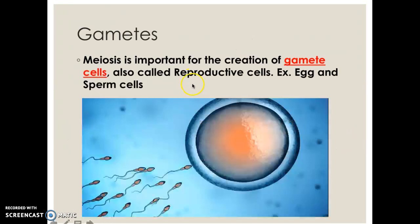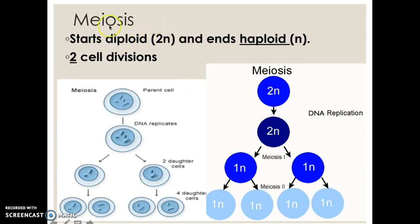Now we are going to learn about meiosis, and here is where I tell you more about gametes. Meiosis is important for the creation of gamete cells, which are also called reproductive cells — for example, egg, sperm, and many other types of cells in other organisms. This is mostly important for sexual reproduction. Gamete cells are used for sexual reproduction. Meiosis starts off diploid; those cells are called germ cells, which are designed in your body to make gamete cells.